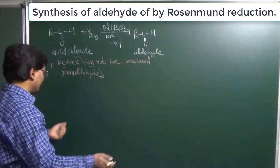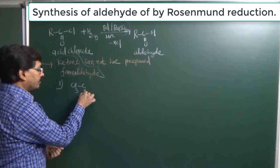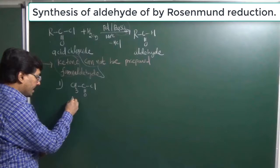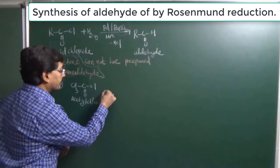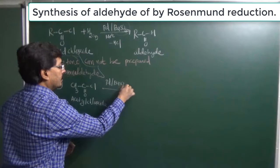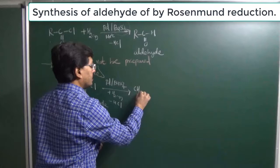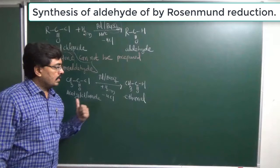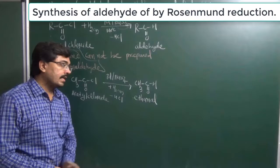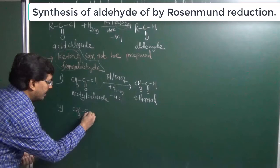Now let's discuss examples. Suppose I have taken this compound — its IUPAC name is ethanoyl chloride, and common name is acetyl chloride. Acetyl chloride reduction is done by using Palladium over Barium Sulphate. Chlorine will be removed and hydrogen will enter, giving us CH3C double bond O-H. This structure is known as ethanal.